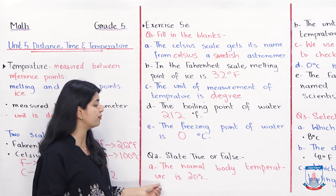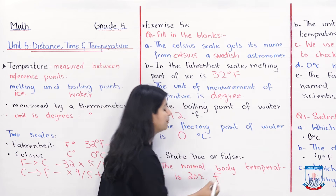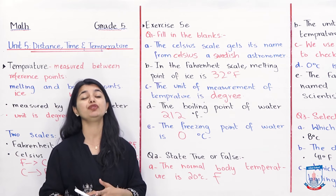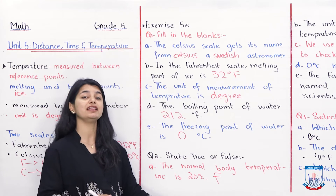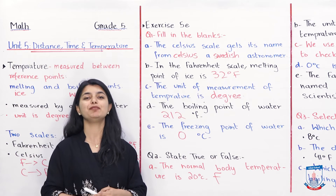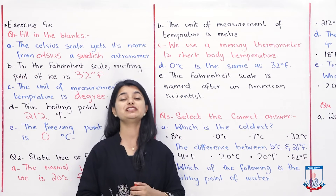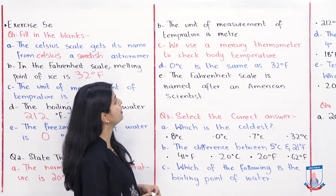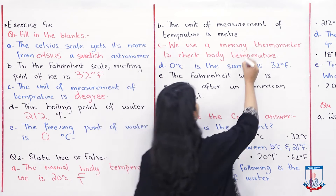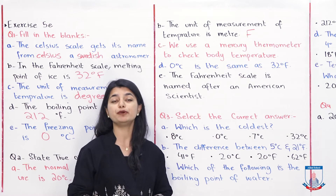Question number 2 is true or false. Statement A: the normal body temperature is 20 degrees centigrade — this is false. From science, we know the normal body temperature is around 38 to 39 degrees centigrade, so this statement is incorrect. Part B: the unit of measurement of temperature is meter — this is false, because we have confirmed the unit of temperature is degrees.